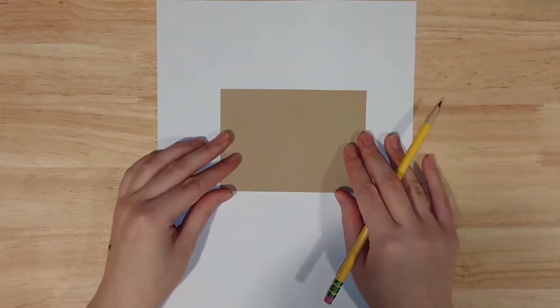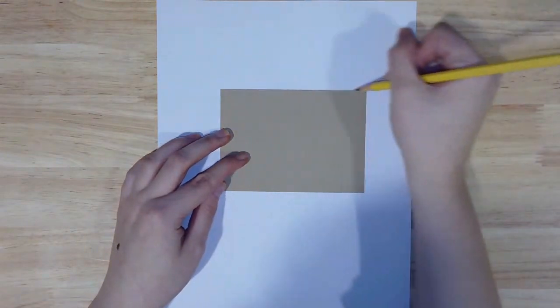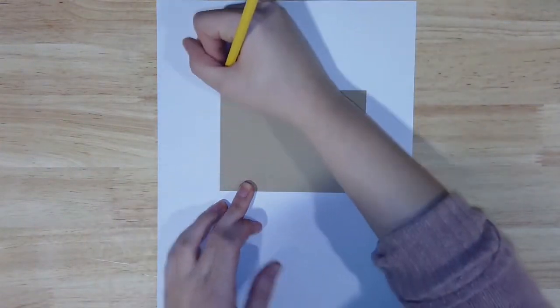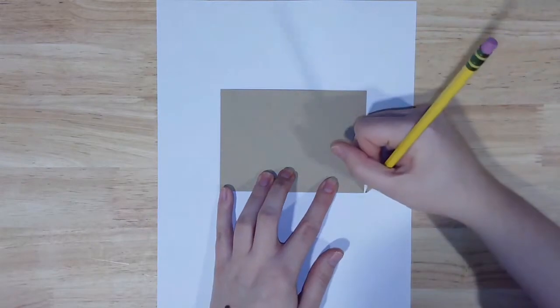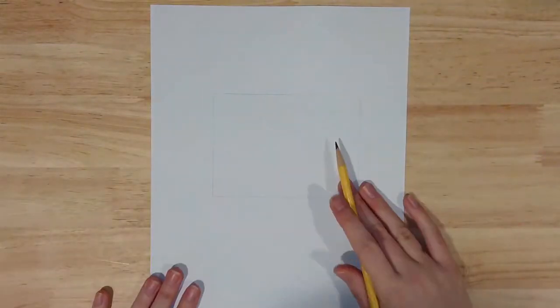To start our project we need to choose a design for our block print. To help you plan, you can trace the outline of one of your blank cards onto a piece of scrap paper so you have a canvas to sketch on. You can also print out an image that's no longer than three and a half by four and seven-eighths inches.